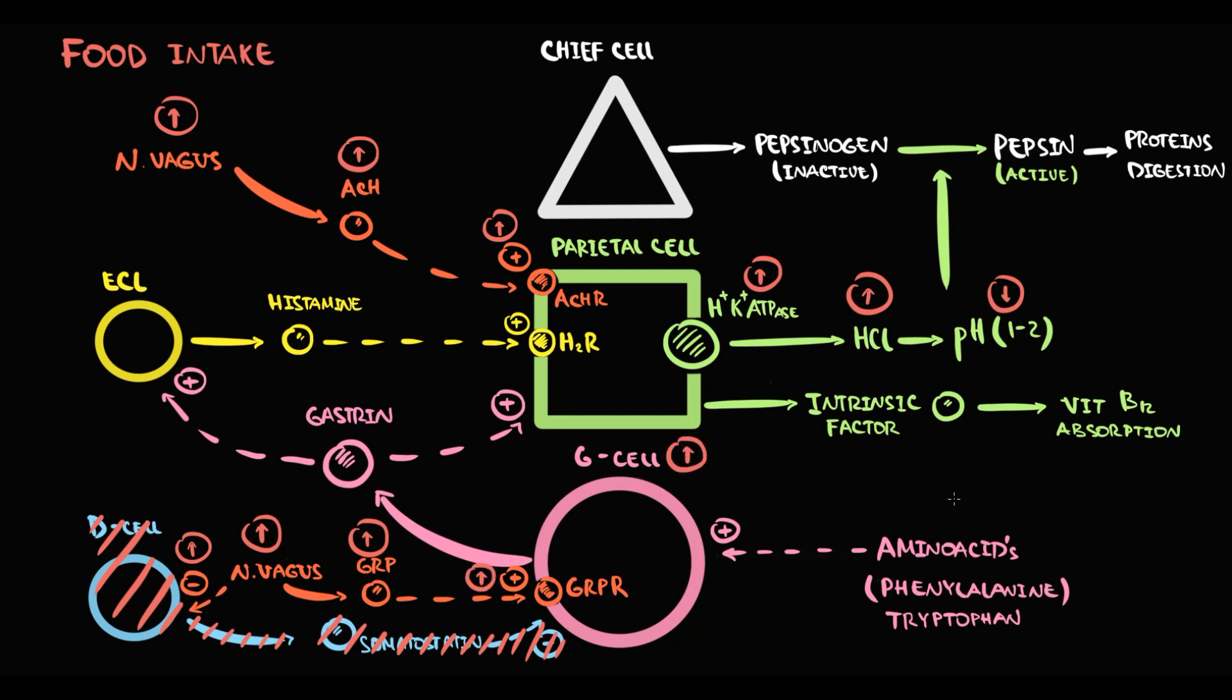Simultaneously, amino acids that are contained in the meal provide a strong stimulation of G cells. The effect of the vagus nerve combined with amino acids in the meal causes very potent stimulation of G cells. In response to this, G cells increase the production of gastrin.